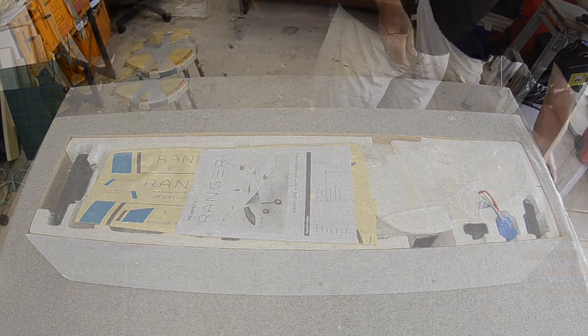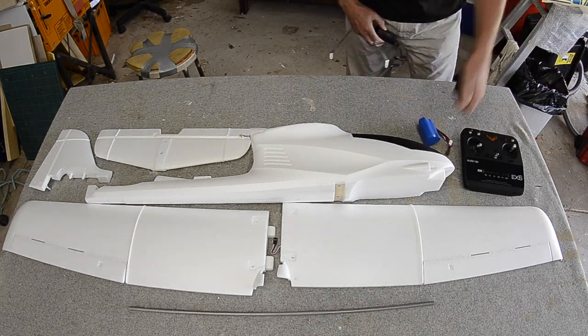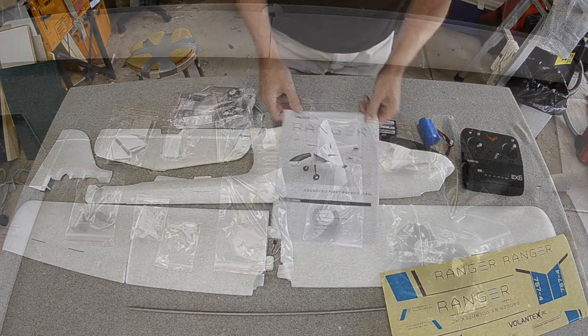Here's a quick look at what's in the box. We have the fuselage, wings, tail surfaces, radio, spa, batteries, charger, all the bits and pieces.